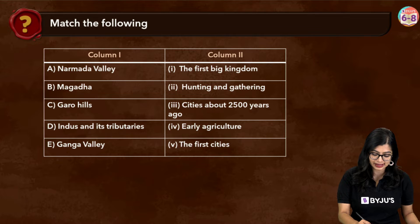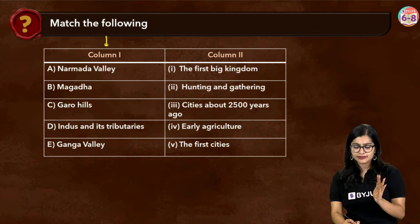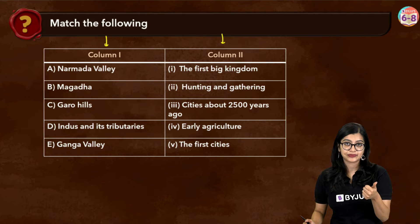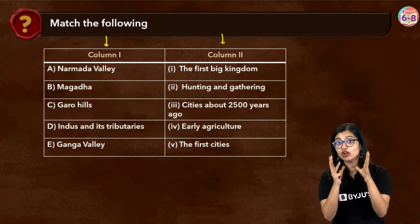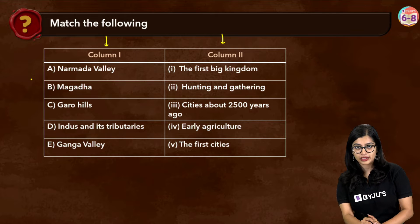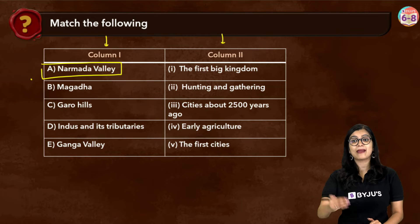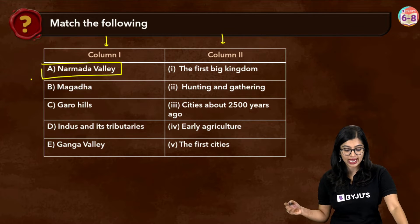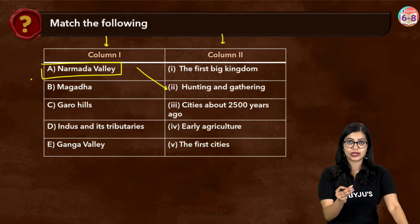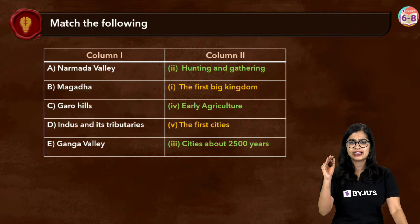The first question is a match the following. Match the following questions are always easy — they give you column one and column two and you need to match whatever is in column one with the appropriate options in column two. A methodology to keep in mind: don't look at all of it at once; look one by one. For example, look at 'Narmada Valley' first, then amongst the five options figure out the best match — which is option two, hunting and gathering. This avoids confusion.